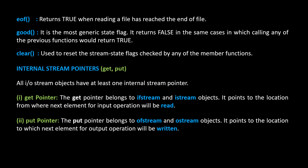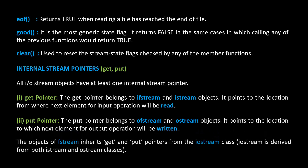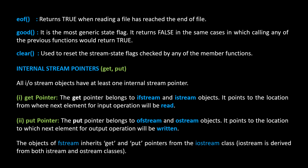The put pointer belongs to ofstream and ostream objects. It points to the location to which the next element for an output operation will be written. The objects of fstream inherit get and put pointers from the istream class. fstream is derived from both istream and ostream classes.